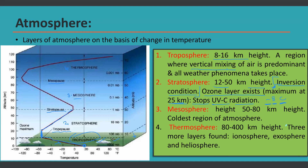After the stratosphere comes the stratopause, and then the mesosphere. In the mesosphere, there is no ozone present. No ozone means no absorption of radiation, so temperature starts decreasing again — decreasing all the way down to the mesopause. The mesopause is the coldest region on Earth, where temperature can go as low as minus 90 degrees Celsius.